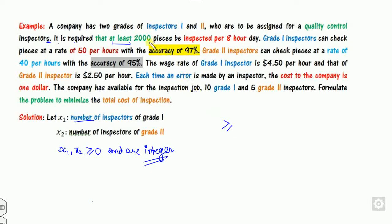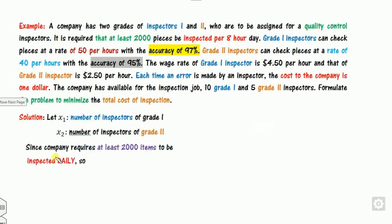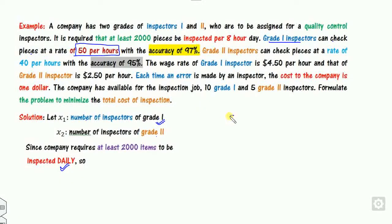At least 2000 pieces must be inspected per 8-hour day. Grade 1 inspectors can check pieces at the rate of 50 per hour. So with X1 grade 1 inspectors working 8 hours, the total pieces inspected is 8 × 50 × X1.